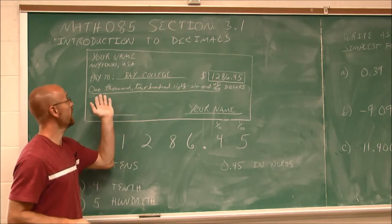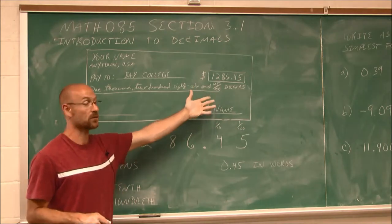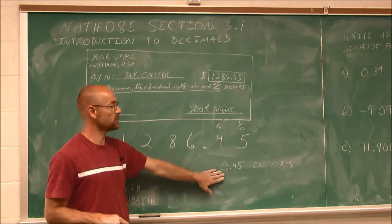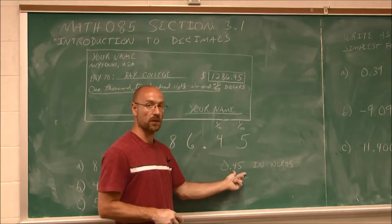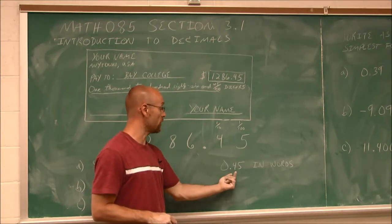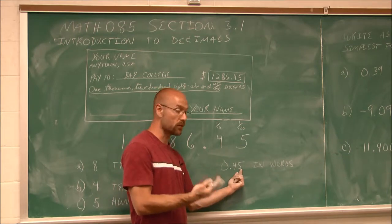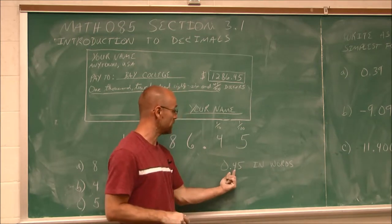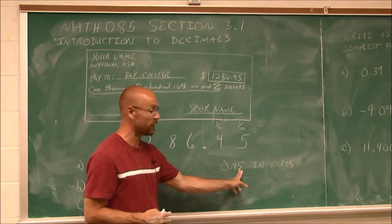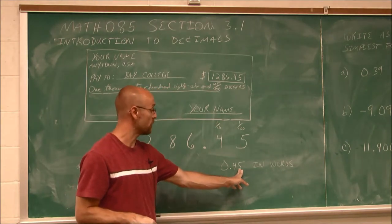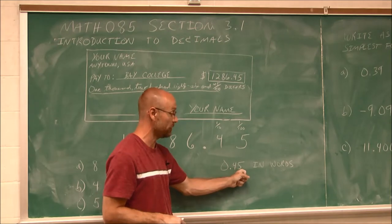Now, if we had to write out this check and our line would not allow us to write this in words, let's do that just for practice. When writing a decimal in words, we always go to the digit that has the last non-zero digit. Here we have 5 as the furthest digit to the right that's non-zero. So we read it just as we would read any other number — this is 45.